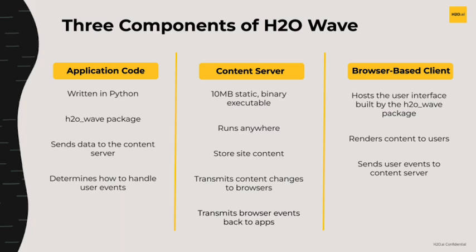The content server is a small static binary executable that can run anywhere from your local machine to the cloud to even a Raspberry Pi. It stores your site contents and transmits content changes to your browser so that your app is fully updated in real time with your latest code. It also takes any browser-based events from your end users and sends those back to the apps. As for the final component, the browser-based client — this is how your end user is going to be interacting with your content. They can use any browser they want, whether that's Safari, Chrome, or Firefox, and it's a place where you're hosting the user interface and sending user events to the content server.